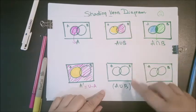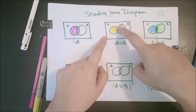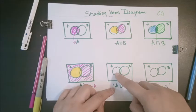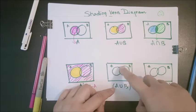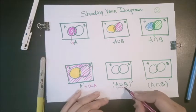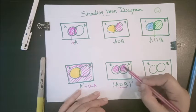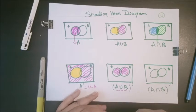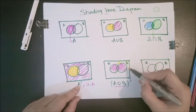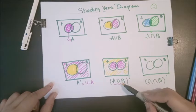A union B means everything present in A and everything present in B. Now (A union B) complement is the opposite of that — excluding A union B, you shade everything else. Following step by step: I color portion A, I color portion B — this pink area is A union B. But to show (A union B) complement, I shade all regions except A union B. So this yellow region represents (A union B) complement.